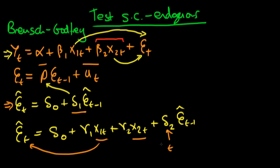What do we mean by endogenous variables in our regression? One typical case is if we have a lagged dependent variable in our model — so instead of x2t we have yt-1. We simply correct our auxiliary regression by replacing x2t with yt-1, and then any t-statistics used for inference on our lagged error coefficients in this regression are still valid.